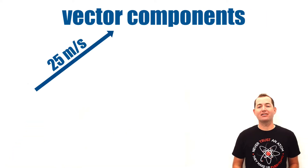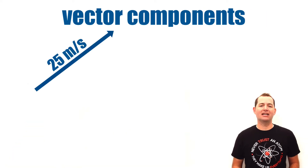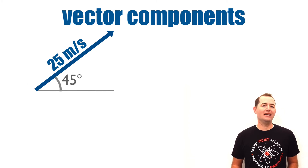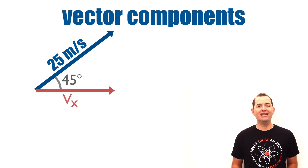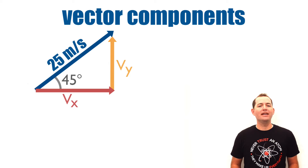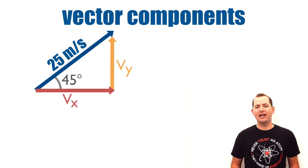If we have a vector that is 25 meters per second at a 45 degree angle, we can break it down into its two components: the component in the x direction and the component in the y direction. We can treat this vector like it's a triangle.